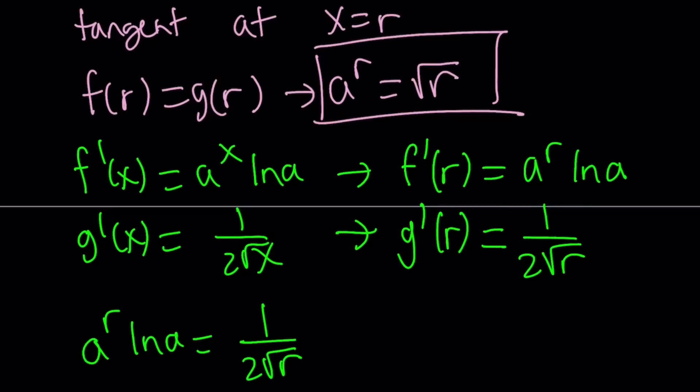So how do we simplify something like this? Okay, so here's what I'm going to do. I do have this equation: 1 over 2 root r equals a to the power r ln a. And I also have this equation. a to the power r is the same as square root of r.